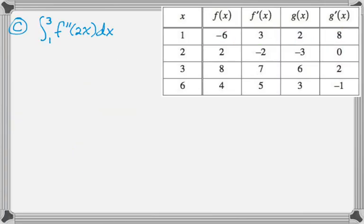Let's move on to part C. So in part C, we're told to evaluate the integral from 1 to 3 of f double prime of 2x dx. So this is really just a u substitution combined with fundamental theorem question. So I feel like the obvious choice is u equals 2x. Hopefully you also felt that way.